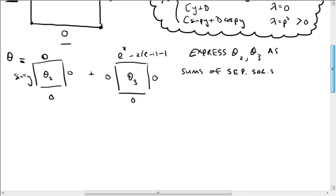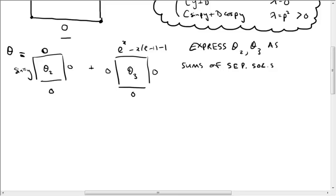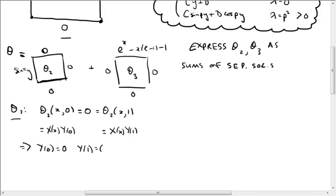For theta 2, we note that theta 2 of (x, 0) along this bottom axis vanishes, as does theta 2 of (x, 1) along the top. This means that X(x)·Y(0) vanishes for all x, and X(x)·Y(1) vanishes for all x. If X is not going to be zero, this implies that Y(0) = 0 and Y(1) = 0. So this separated solution Y that we're looking for is going to have to vanish at 0 and at 1.